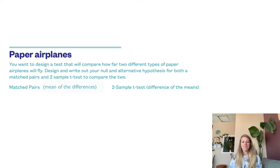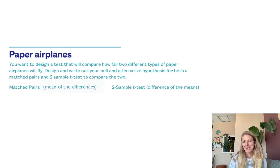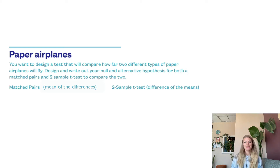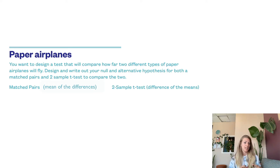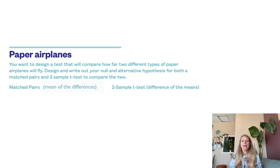A quick example: a paper airplane throwing contest. You have two different types of paper airplanes and you want to see which one flies the furthest. If you were to do a matched pairs design, you'd be calculating the mean of the differences. What ends up happening is you would set up your data kind of like this.